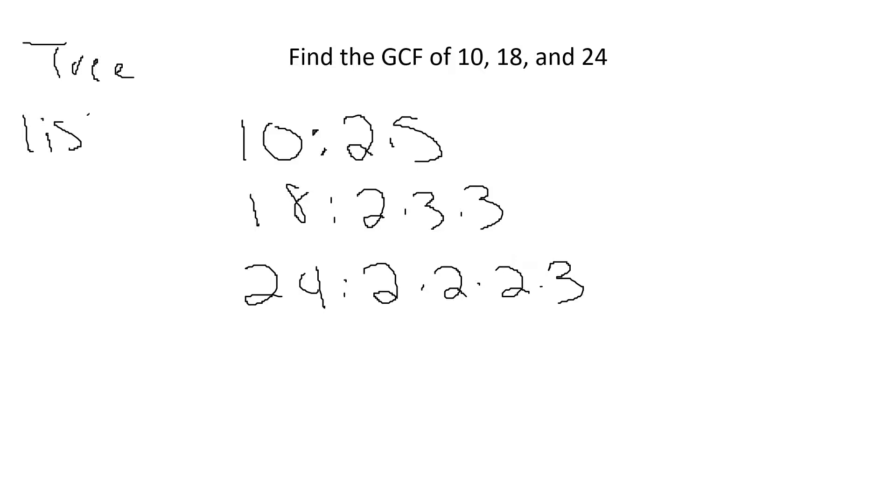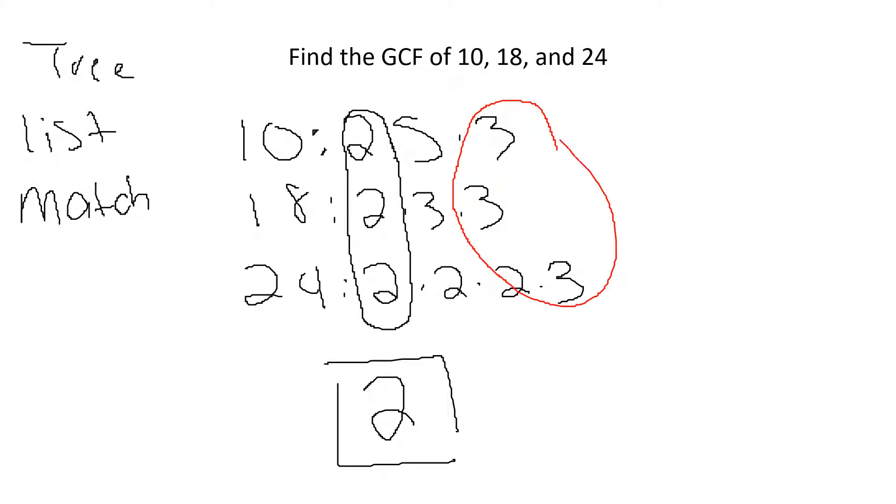Step one is to tree it and then to list it. I did both of those. And now, because it's the greatest common factor, we need to find what matches or what they have in common. All three pieces have to have something in common. In this case, the only number that we have in common is a 2. So therefore, the greatest common factor of 10, 18, and 24 is 2. If this had a 3, then I would circle the 3, and I would multiply 2 times 3 and get the answer.